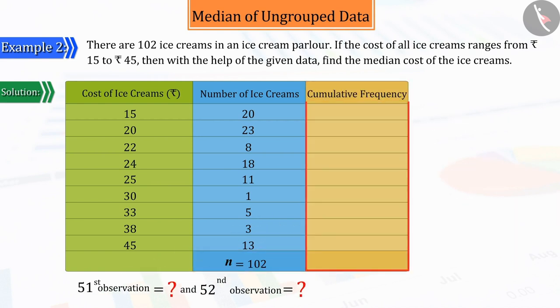Let's see. For this, let's create a new column. In the first line, let's group the ice creams that are priced up to 15 rupees. They are 20 in number.